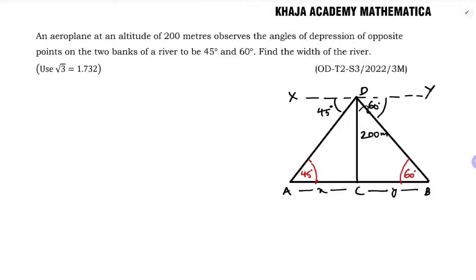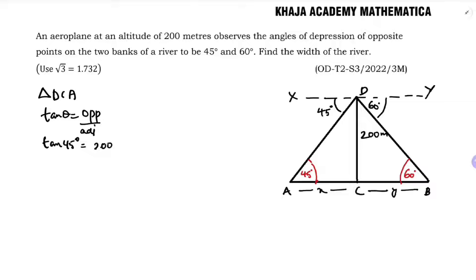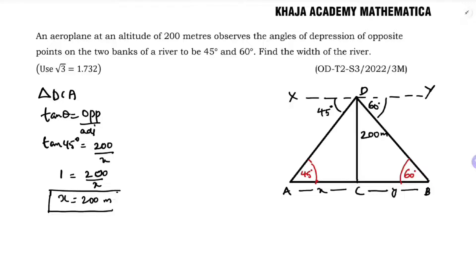Now I'll take the first triangle, triangle DCA. I'll use the ratio tan theta equals opposite over adjacent. So tan 45 degrees equals 200 over x. Since tan 45 is 1, we get 1 equals 200 over x, so x equals 200 meters.